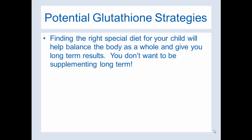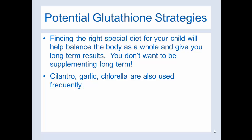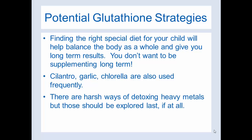Finding the right special diet for your child will help balance the body as a whole and give you long-term results — no one wants to be supplementing long-term, as that is not a strategy. Optimizing digestion is really important, as well as eating foods that don't contain toxins. If your body has issues with detoxifying, you want to consume as pure foods as you can. Cilantro, garlic, and chlorella are also used frequently to help with glutathione. There are harsher ways of detoxing heavy metals, but those should be explored as a last resort — there are so many less risky options to explore first.